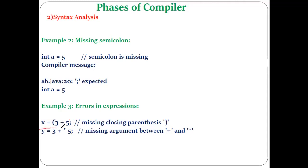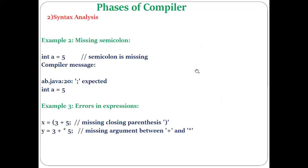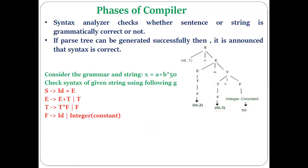A missing argument error can also occur — for example, writing 'y = 3 + * something' where a value or variable is missing between the plus and star operators. These are different kinds of syntactical errors that arise when predefined rules of writing the program are not followed, and the syntax analyzer handles all these checks.